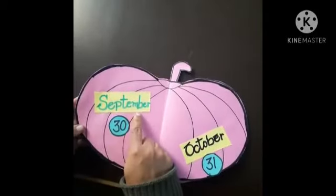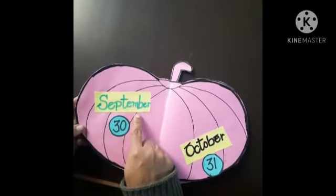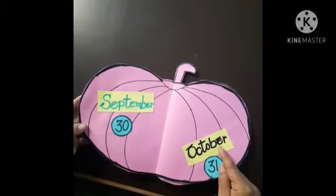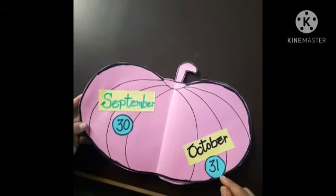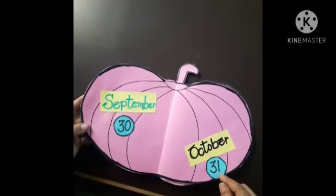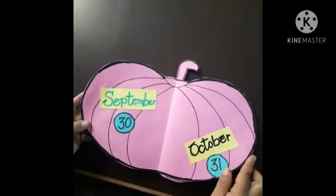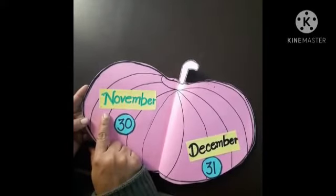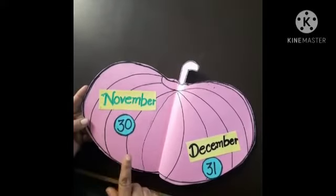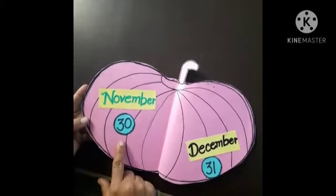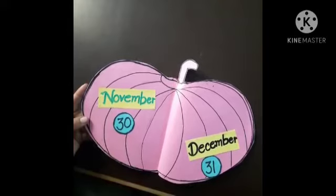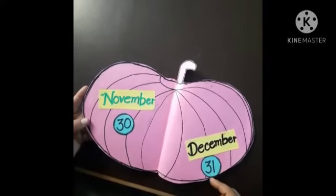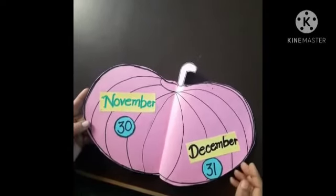The 9th month is September, with 31 days. The 10th month is October, with 31 days. The 11th month is November, with 30 days. And the last month is December, with 31 days.